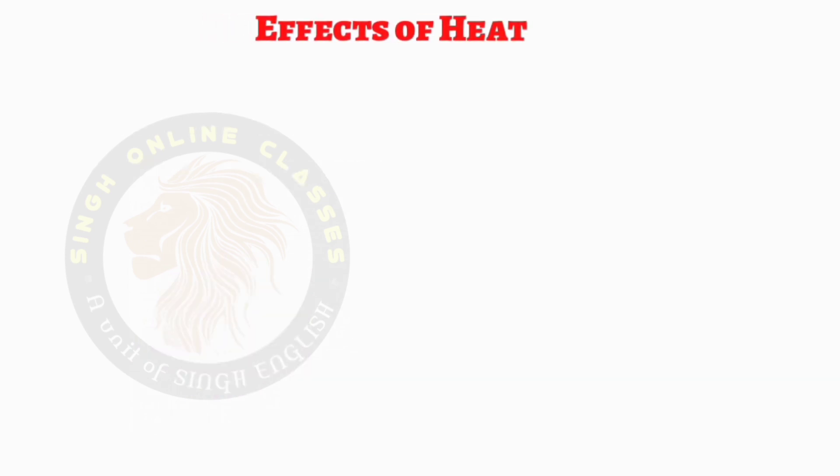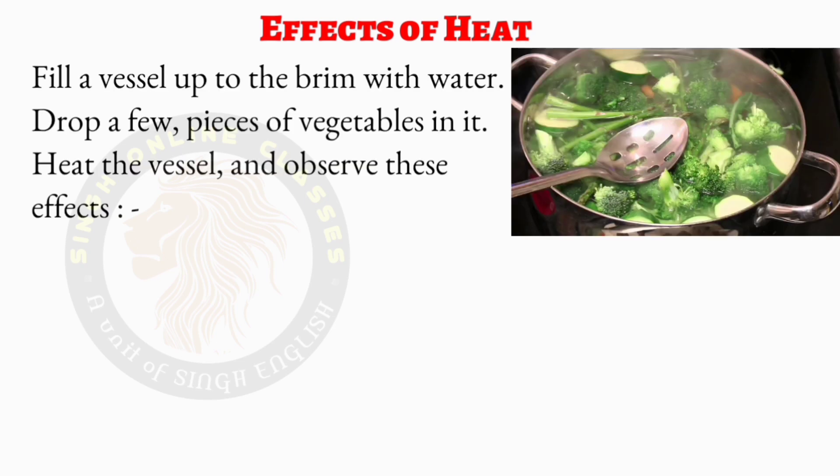Next is the effects of heat. To observe the effects of heat, we take a vessel and fill it up to the brim — brim means the lip of a container — with water. We drop a few pieces of vegetables in it, then heat the vessel and observe the changes that happen.